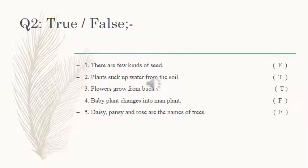Question number 2. Number 1: There are a few kinds of seeds. There are a lot of seeds. Number 2: Plants suck up water from the soil. Plants suck up water from the soil. It's a good thing.